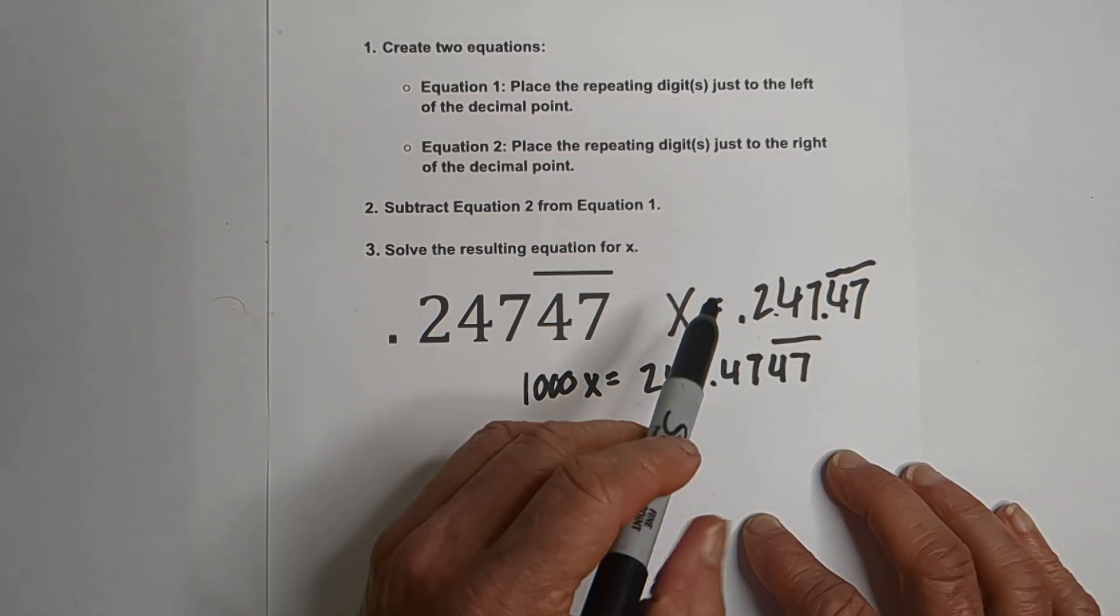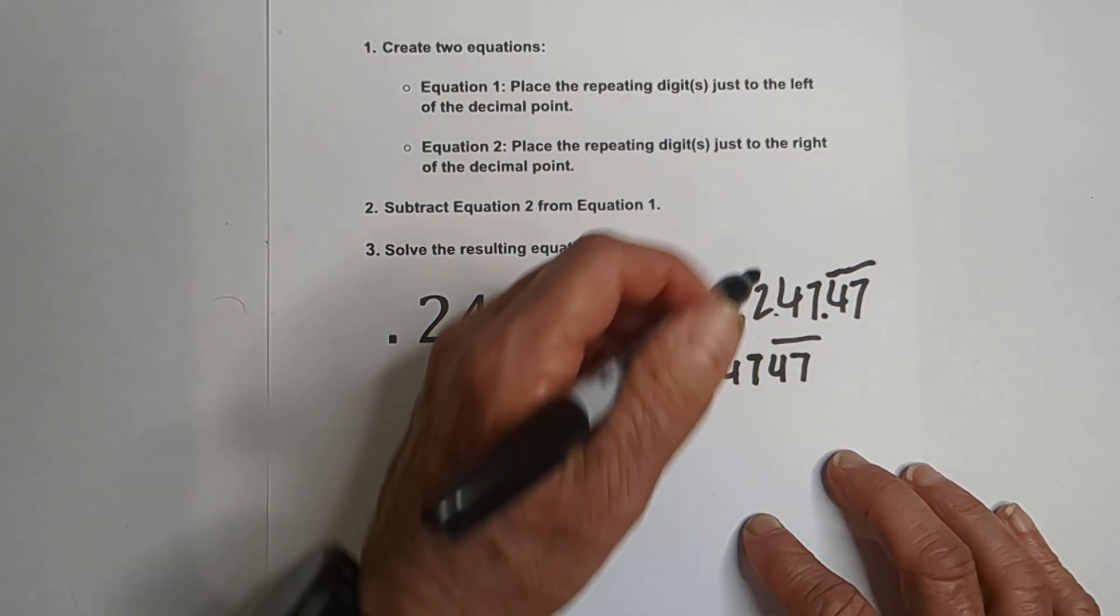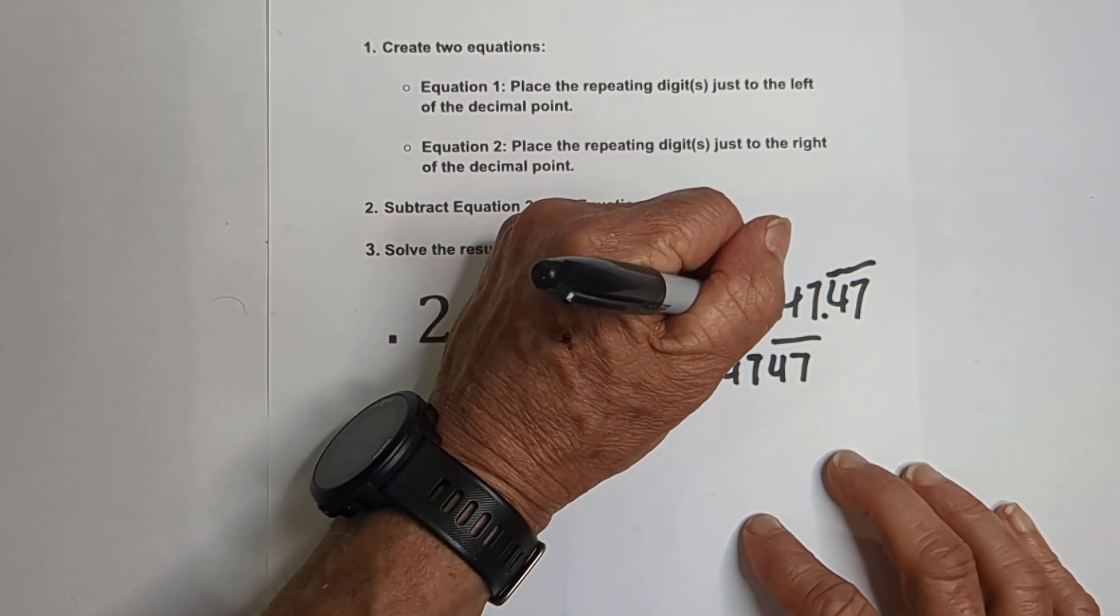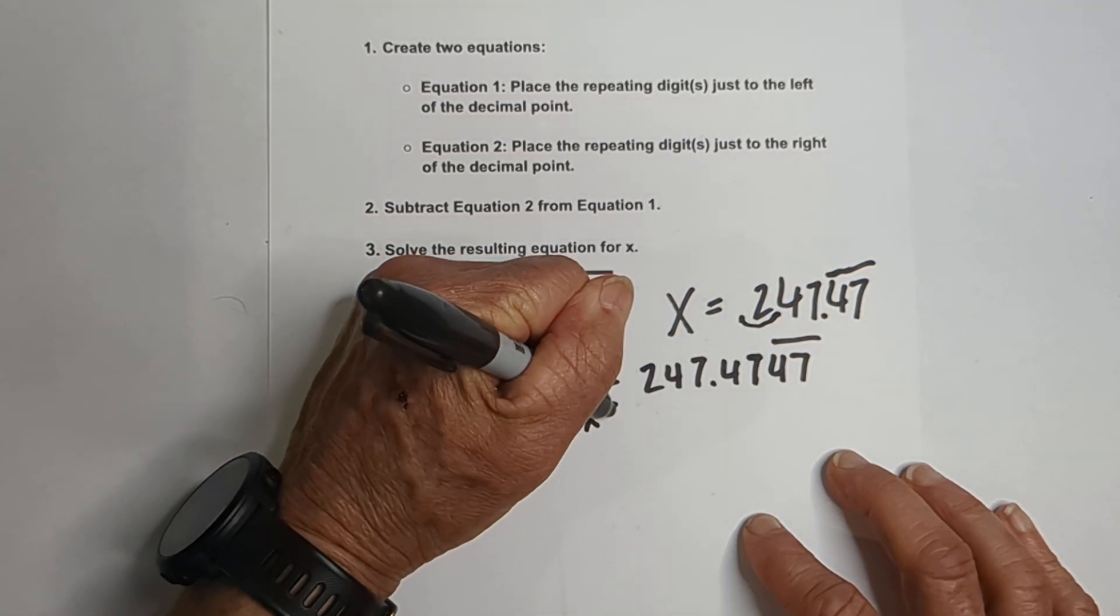Now with equation 2, we want the 47, 47 just to the right of the decimal. And we can do that by moving it one place. So we'll multiply it by 10X equals,